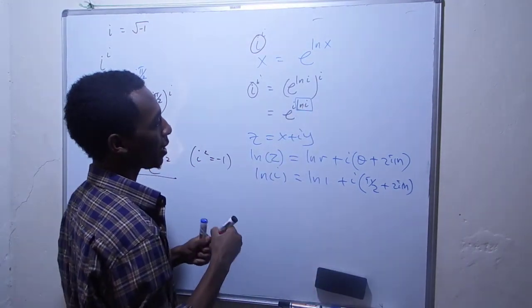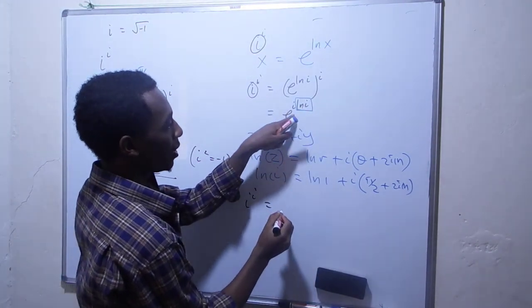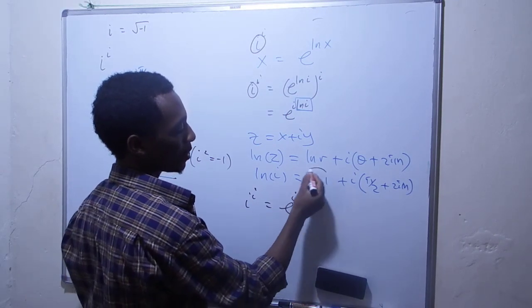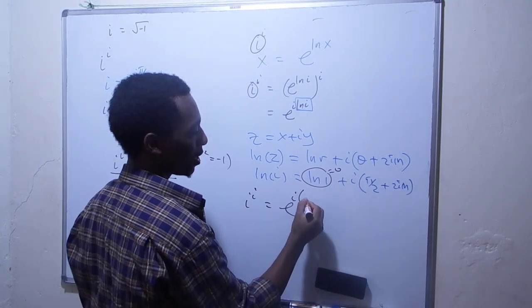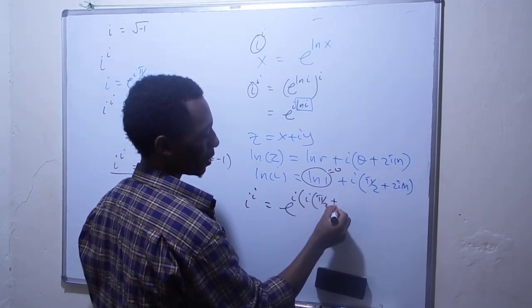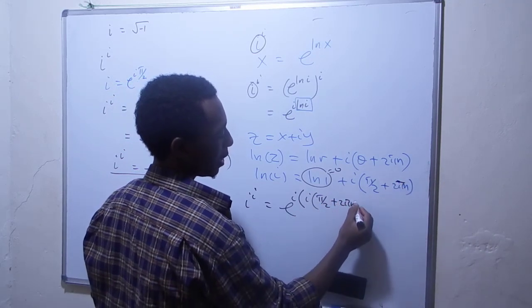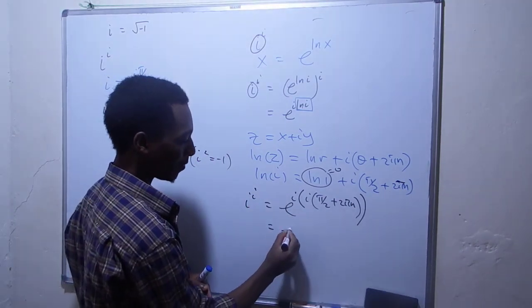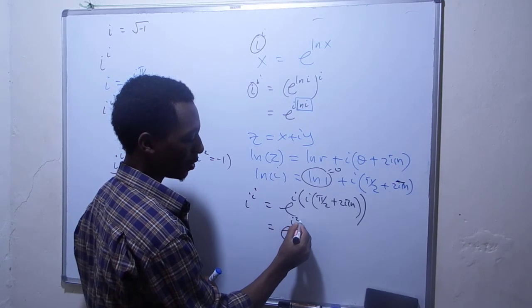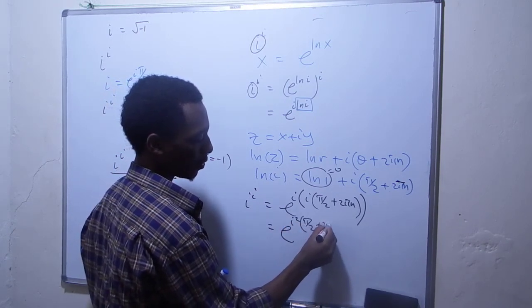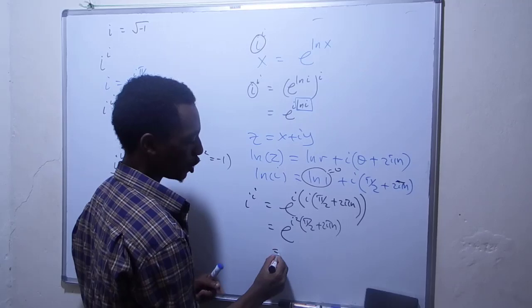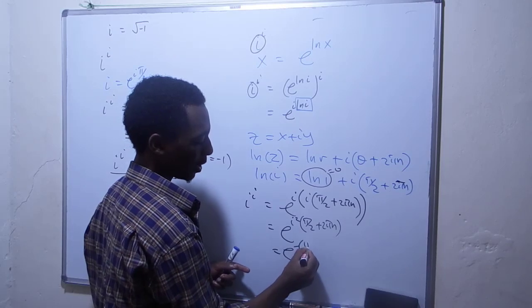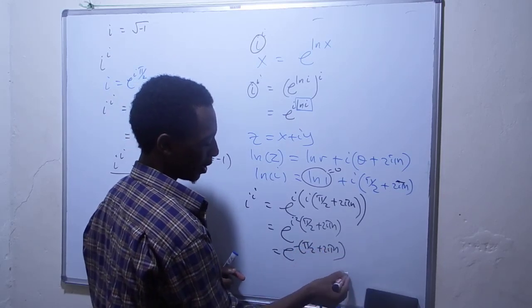Substituting that back, i to the power i equals e to the i times (ln(1) + i(π/2 + 2πn)). Since ln(1) is 0, we have e to the i times i(π/2 + 2πn), which is e to the i squared(π/2 + 2πn). Since i squared is negative 1, we have e to the power of negative (π/2 + 2πn).